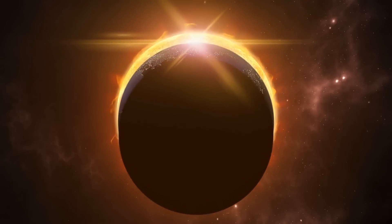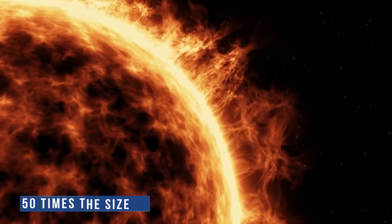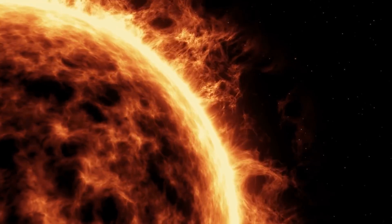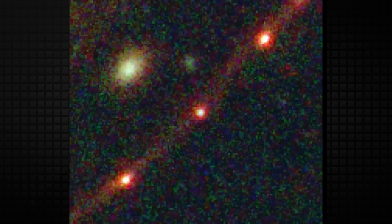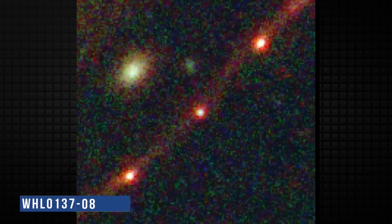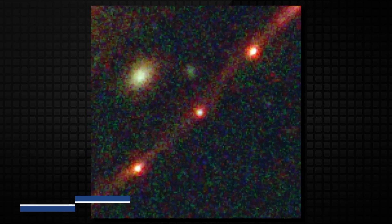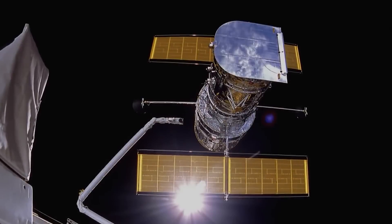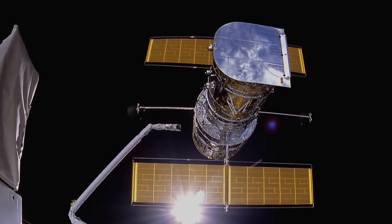Scientists say Earendel is at least 50 times the mass of the Sun and emits light comparable to that of the brightest and most massive stars in the universe. The galaxy cluster WHL 0137-08 lies between us and the star Earendel, and it was through its gravitational lensing that Hubble was able to make the discovery.